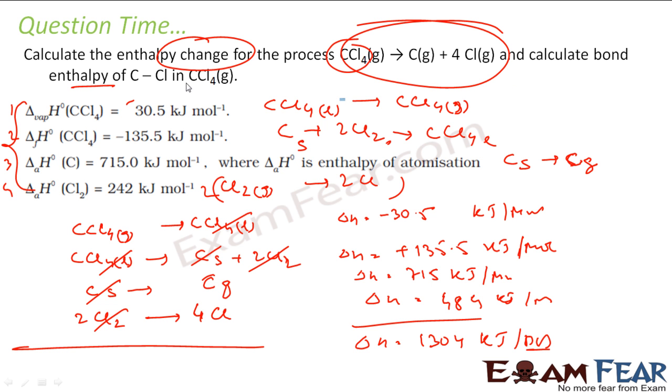So in this, since I am breaking 4 CCl bonds, if I want to find the mean bond enthalpy of CCl, what I have to do is divide this thing by 4. It is 325 kilojoule. So the enthalpy of CCl is 325 kilojoule per mole, but the total enthalpy of the reaction is 1304 kilojoule per mole.